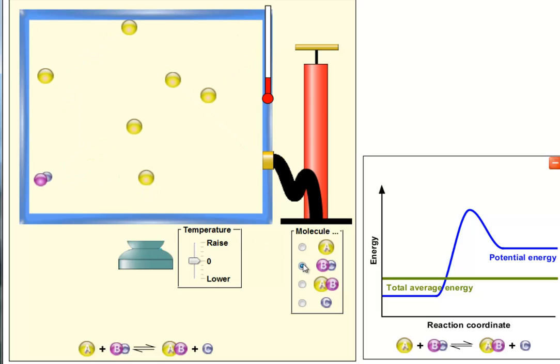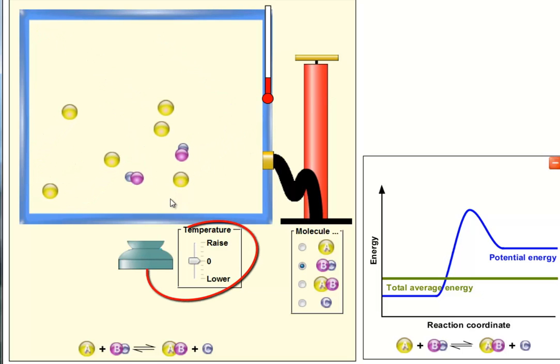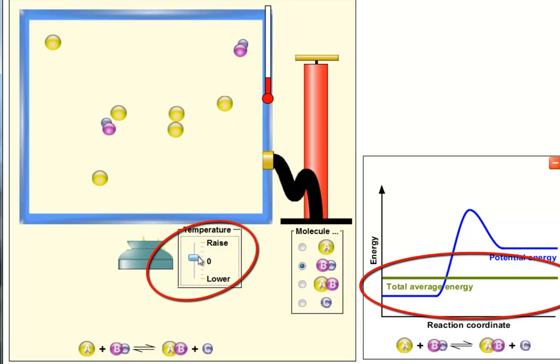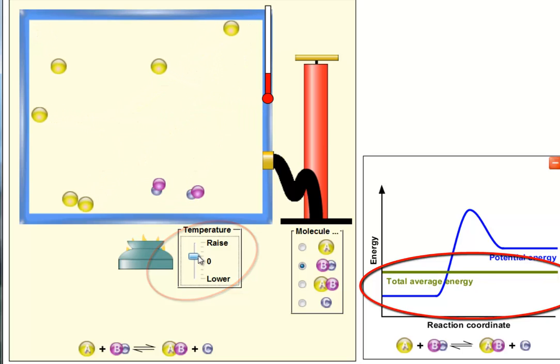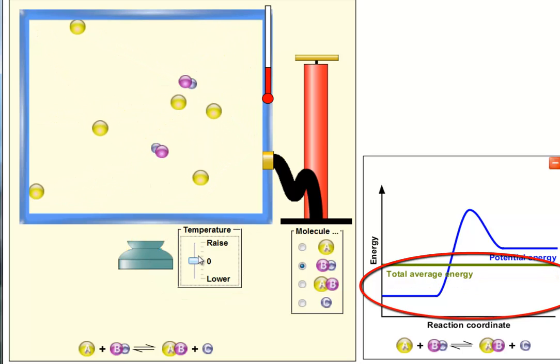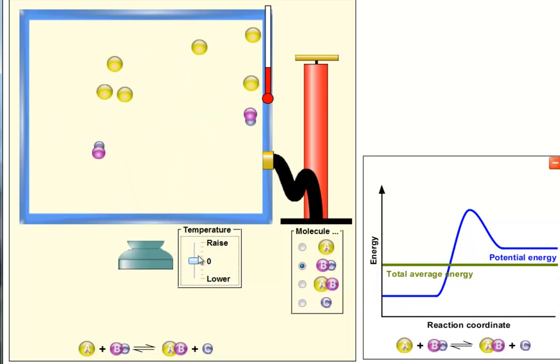Let's put in some more BCs. If we put in some more BCs, we're increasing the likelihood of an A bumping into a BC combination. And I notice that some of these particles are moving a little bit faster. Tell you what, let's increase the temperature. Notice how the average energy, total average energy goes up. So now we've increased the likelihood that one or two of those particles are going to have enough energy.